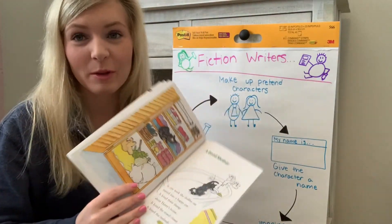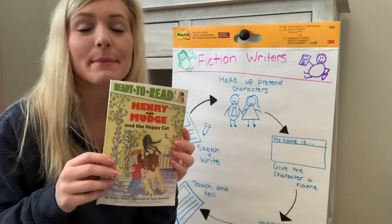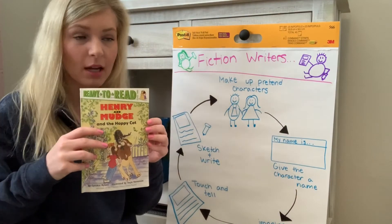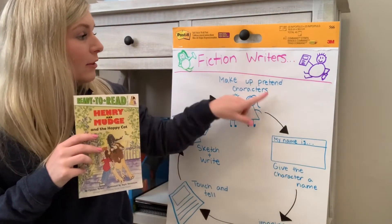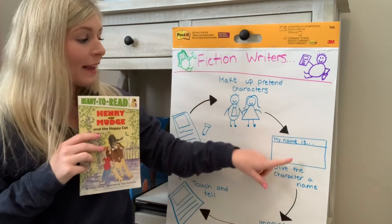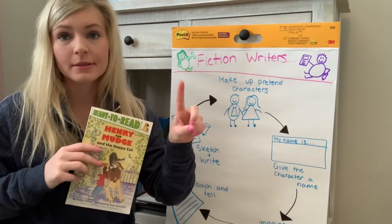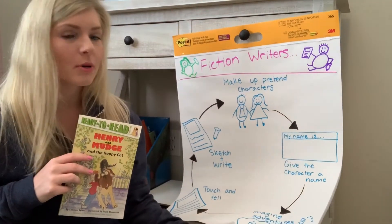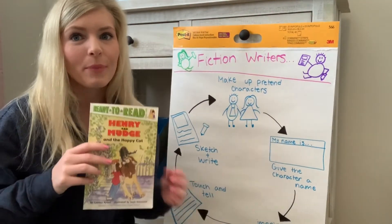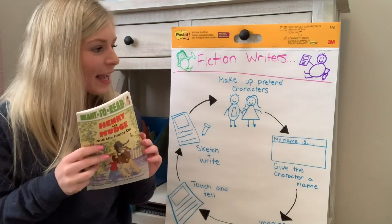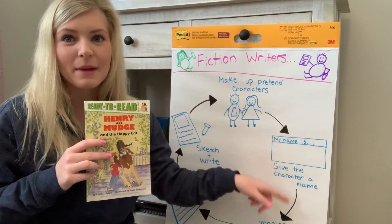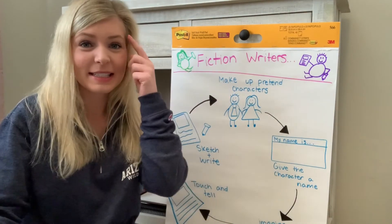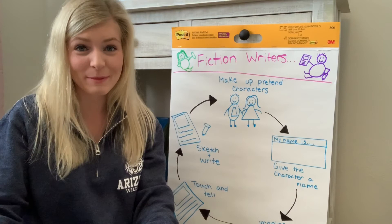So that was the first part of the book Henry and Mudge — and Henry and Mudge is a fiction book. I want to go back over the chart with you and compare it to Henry and Mudge. Henry and Mudge, they are pretend characters and they have names — we know that they're Henry, Mudge, and Henry's dad. We haven't gotten to the part where they go on an adventure yet, but that's coming in the book. Today, I just wanted to show you the characters and their names in the beginning of the story. Because your job today is to think up your pretend characters and give them a name.